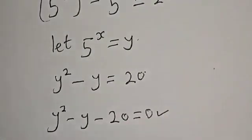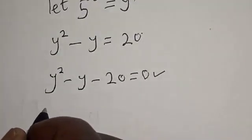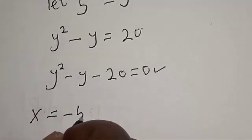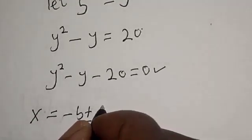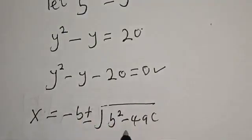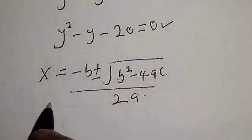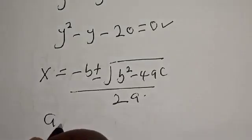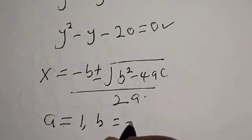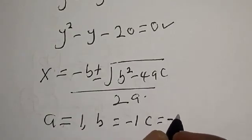This is a quadratic equation which can be solved using the quadratic formula: x equals negative b plus or minus square root of b squared minus 4ac, all over 2a. From our equation, a equals 1, b equals negative 1, and c equals negative 20.